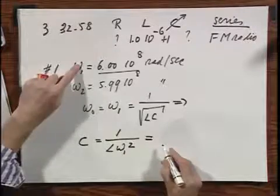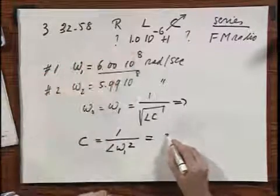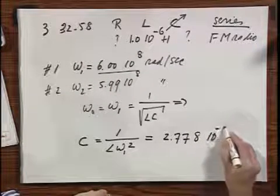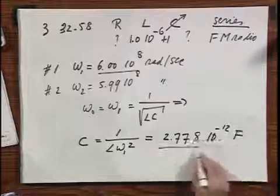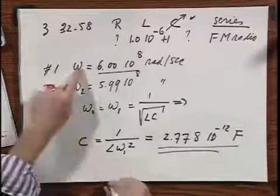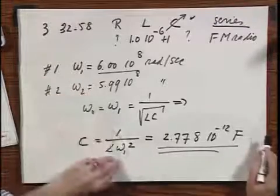I know what omega 1 is. I know what L is and I found, I could have made a mistake, 2.778 times 10 to the minus 12 farads. So I know how I should tune C in order to receive omega 1 at its resonance frequency.